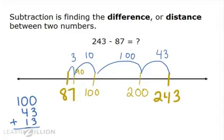When I add 100 plus 43 plus 13, I find that the distance between 87 and 243 is 156. So 243 minus 87 equals 156.